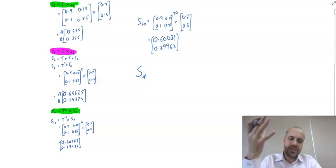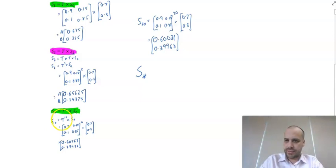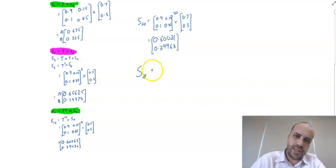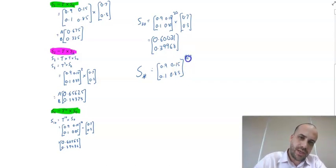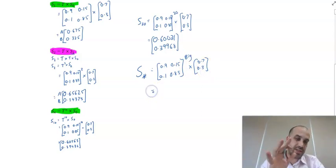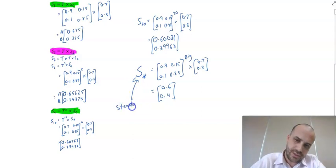We're heading towards something called a steady state matrix. If you raise the transition matrix to a very large power — T to the 100 or T to the 1000 — multiplied by the initial state vector of 0.7 and 0.3, the answer is going to approach 0.6 and 0.4. We call that S* — the steady state.